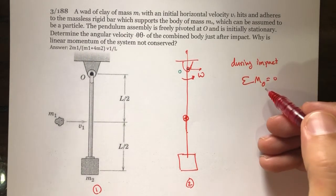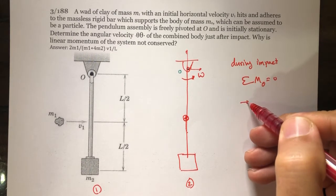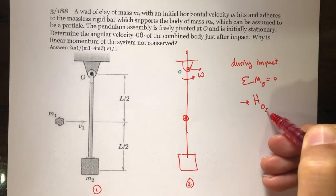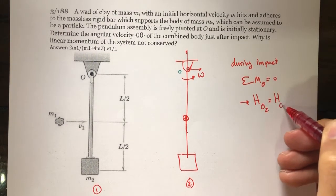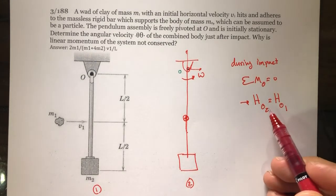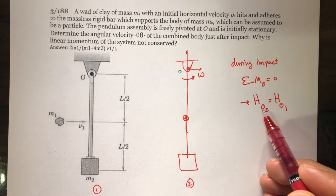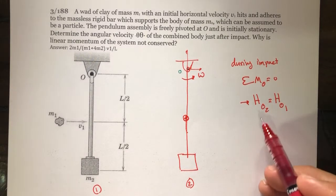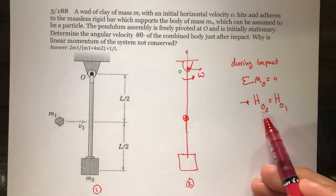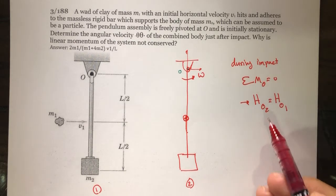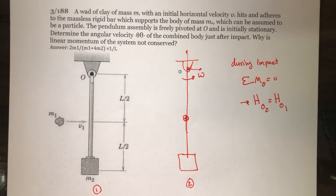Because the sum of moments about point O is equal to zero, we can write H_O2 = H_O1. The angular momentum before impact equals the angular momentum after impact. H_O2 is going to be in terms of omega, so we can find omega from there.